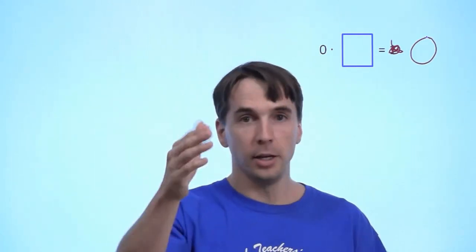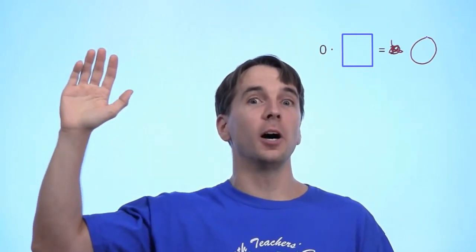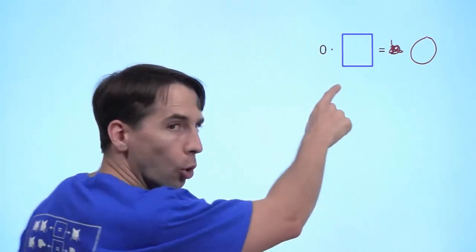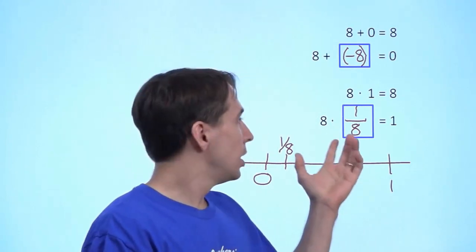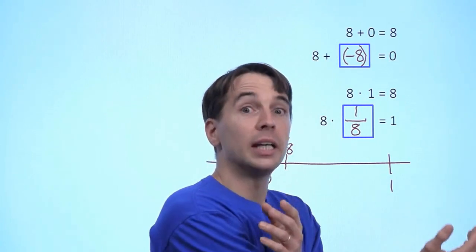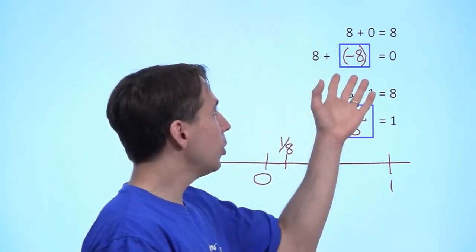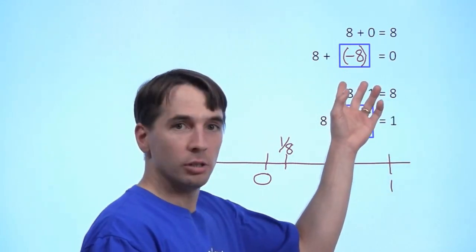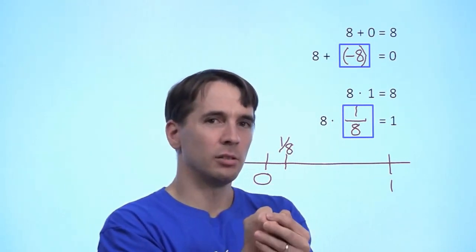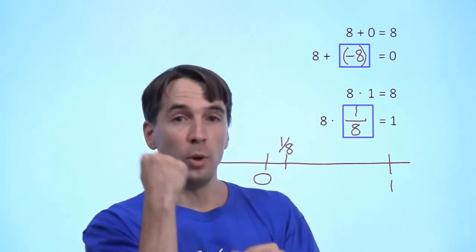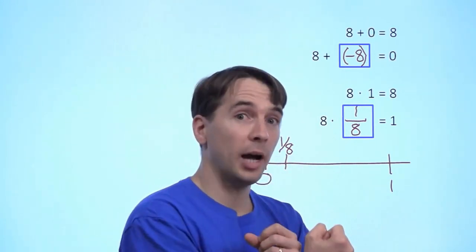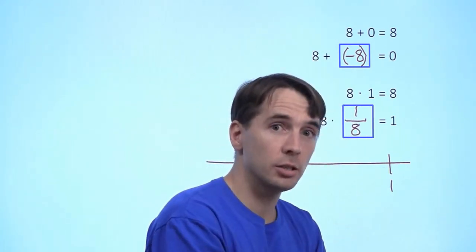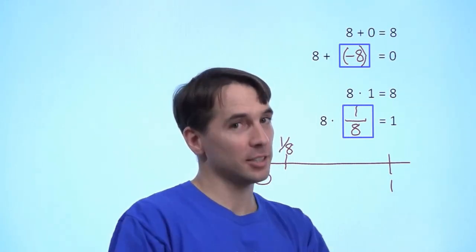Repeat after me: I will not take the reciprocal of 0. Let's recap: no reciprocal of 0. What we did here was make up a whole new number — the reciprocal — just to answer the question: what do I multiply a number by to get 1? Now, looking back at addition, we made up negation to answer that question, and then used negation to define subtraction. Adding a negation gives you subtraction. So what do you think we're going to do with multiplication? We start with a number, we multiply by a reciprocal. Multiplying by a reciprocal — that's what's coming up next: division.